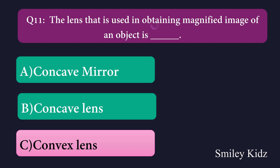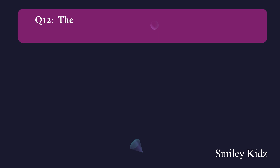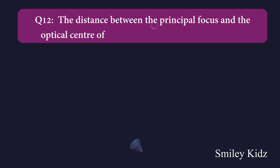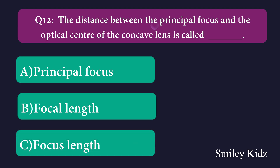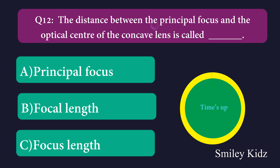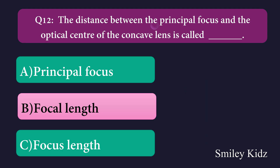Question number twelve: The distance between the principal focus and the optical center of the concave lens is called dash. Option A: principal focus, Option B: focal length, Option C: focus length. The right answer is focal length. The distance between the principal focus and the optical center of a concave lens is called focal length.